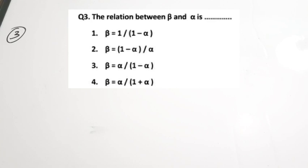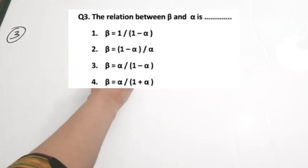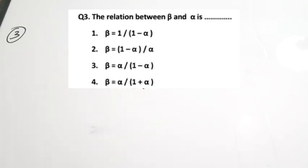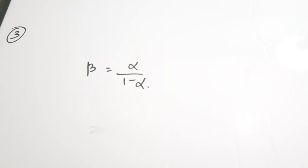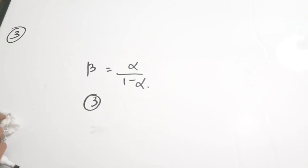Question 3: The relation between beta and alpha is? This is a direct question. The relationship is beta equals alpha divided by 1 minus alpha. Among the options, only option 3 has alpha in the numerator with (1 minus alpha) in the denominator. Correct answer is option 3.